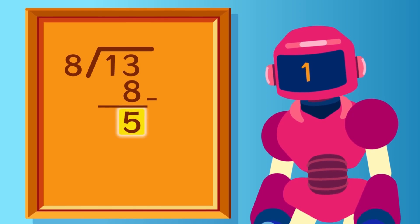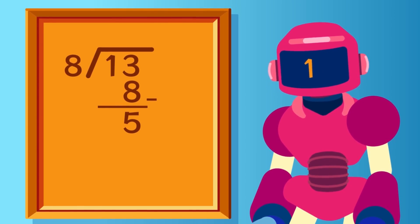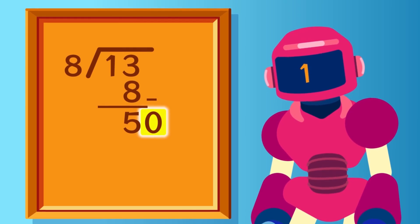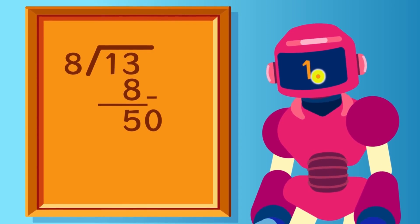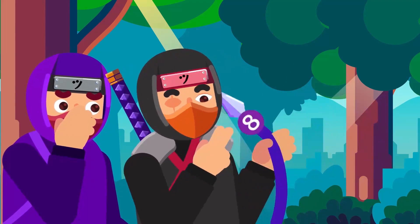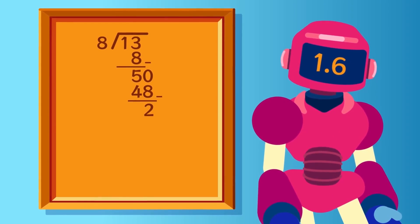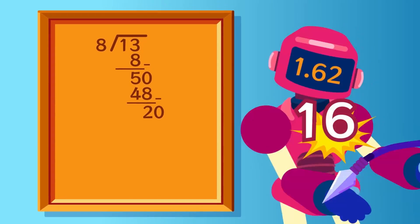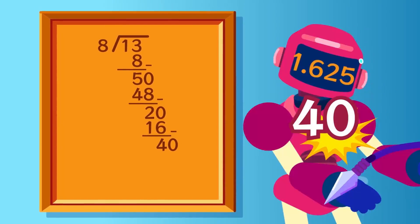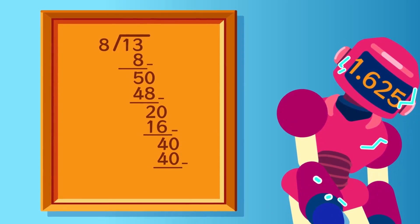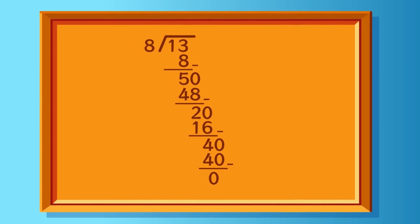Now, as 5 is the remainder and is less than 8, to continue the long division process we have to introduce a 0 to 5, which adds a decimal point in the quotient value. After introducing the 0, we continue dividing the remainder by the denominator until the remainder is 0. Here we have completely divided 13 by 8 until we obtain 0 as the remainder.